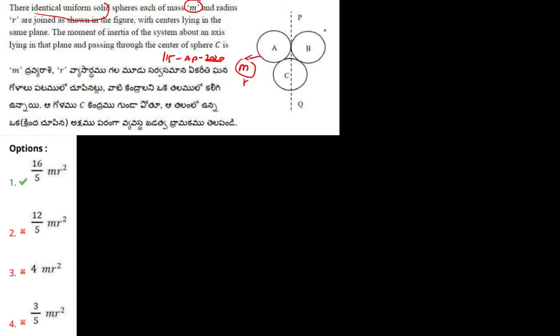Now they are joined as shown in the figure with centers lying in the same plane. The moment of inertia of the system about an axis lying in that plane and passing through the center of sphere C. So we have to find the moment of inertia about an axis that is PQ.